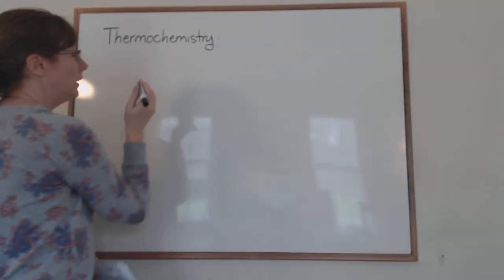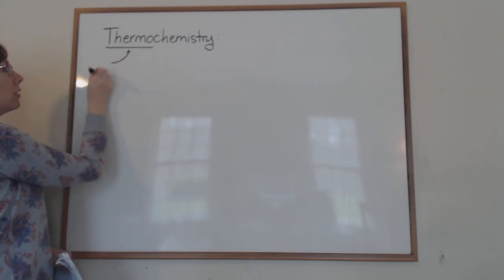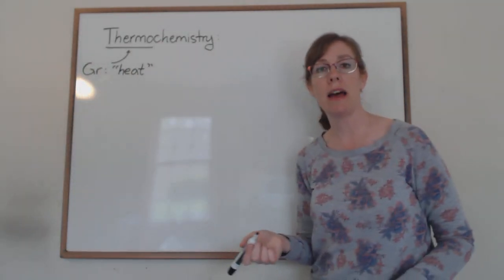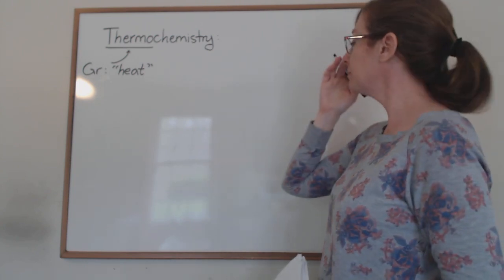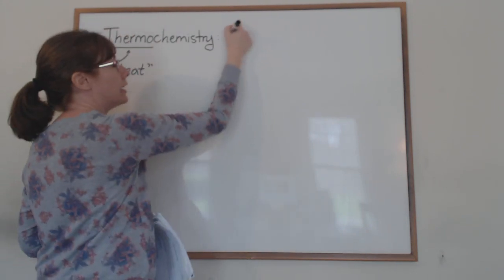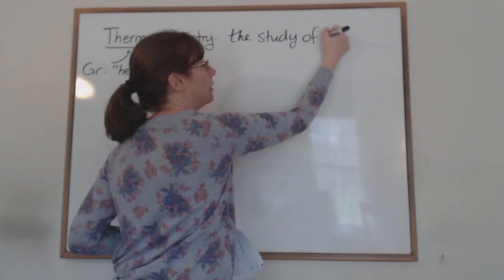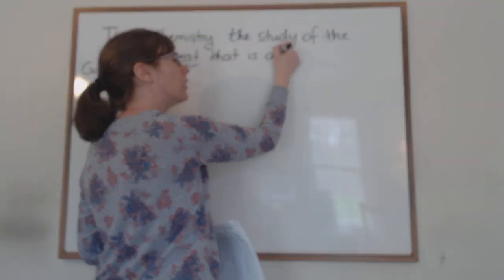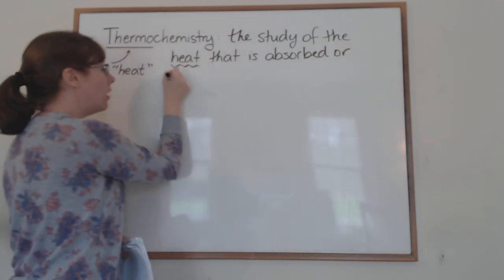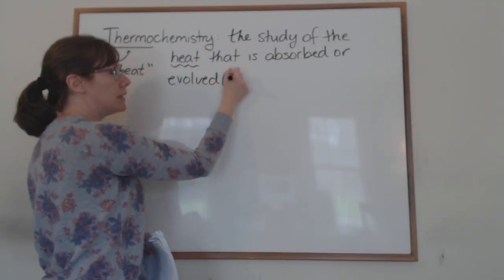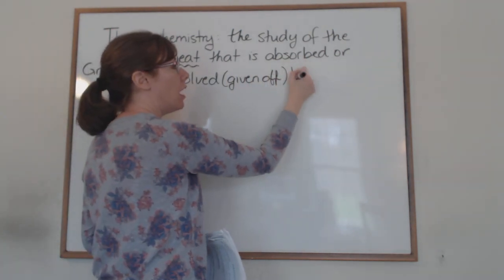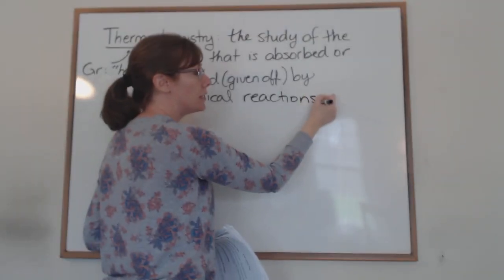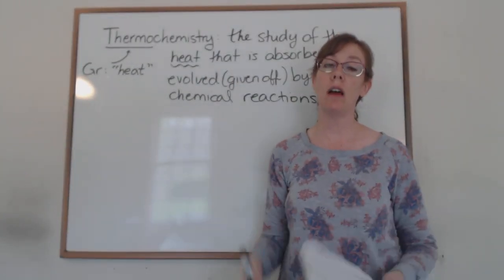You can have a little hint if you know that the root 'therm' is Greek for heat — which you probably guessed because we use it for thermometer, thermostat, hypothermia, that kind of thing. So thermochemistry by definition is the study of the heat that is absorbed or evolved — and in this context, evolved just means given off or produced — by chemical reactions. It's really the intersection of heat, energy, and chemical reactions.